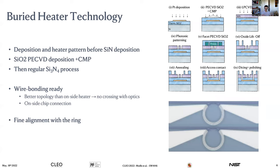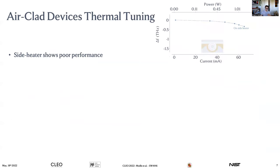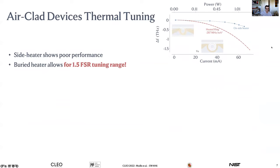Because we use e-beam lithography for the ring layer, we achieve very fine alignment between the heater and the ring. Our measurements show that the side heater has very poor performance — about 300 GHz shift per 60 mW. With the buried heater, you can shift more than 1.5 FSR with only 70 mW, which is huge — more than one full repetition rate of the solitons.